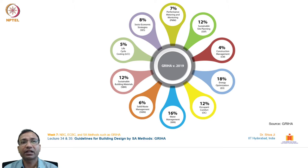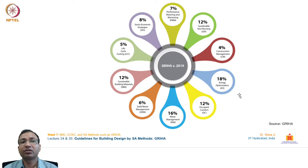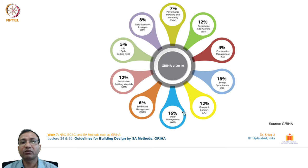Looking at the percentage share of each section: sustainable site planning has 12%, construction management 4%, and energy optimization 18% — the largest share, highlighting the importance of energy conservation. Occupant comfort receives 12% and water management 16%, the second highest share, reflecting the criticality of water conservation.